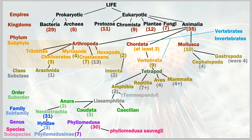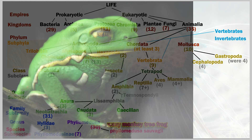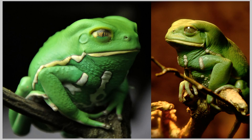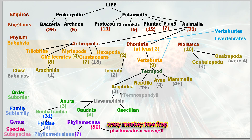Branching out from phyllomedusa into one of those 30 species: phyllomedusa sauvagii. Ladies and gentlemen, this is the scientific name — in English we call it the waxy monkey tree frog. A totally awesome creature I've been wanting to get my hands on for a long time. They are beautiful, gorgeous, and so alien-looking. Look how far we had to go: empires, kingdoms, phylum, classes, orders, families, genera, and finally species.